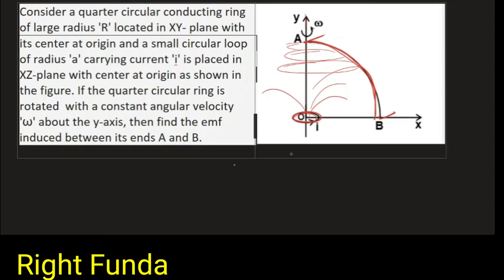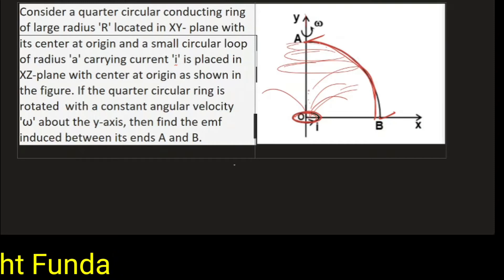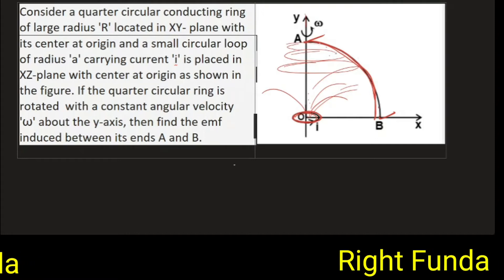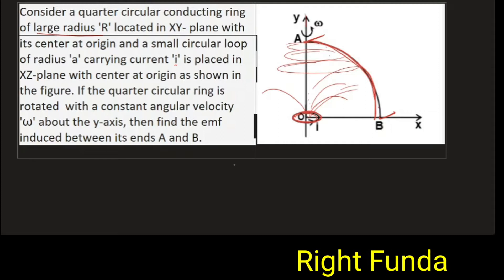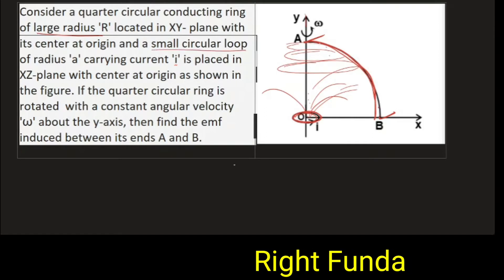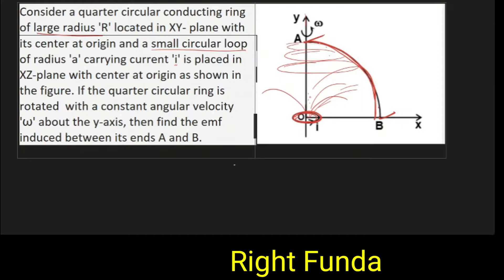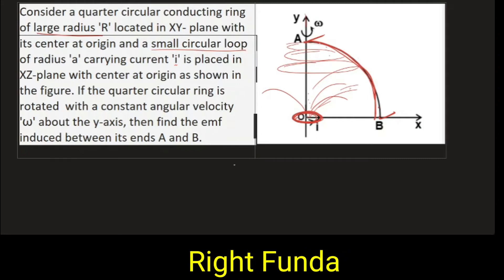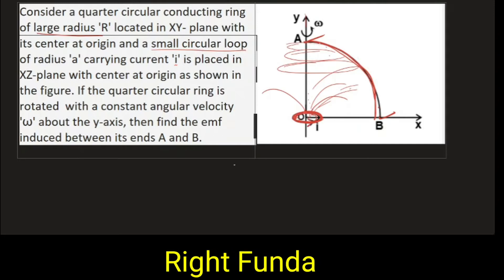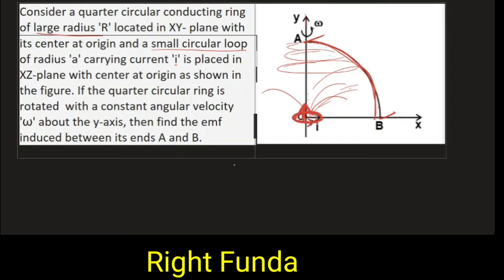How do we solve this problem? The magnetic field is different at different points, and for a ring we only know the field on the axial point. But if we look at the wording of the question, the ring has a large radius R and the loop has a very small radius 'a'. Since R is much greater than 'a', we can replace this current loop by a small magnetic dipole. We know the magnetic field due to a dipole at its axial point and equatorial point under the approximation R >> a.